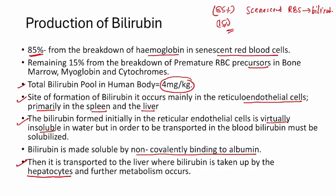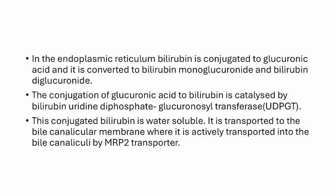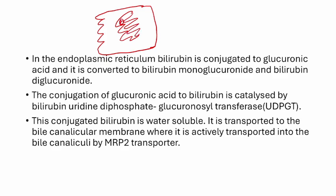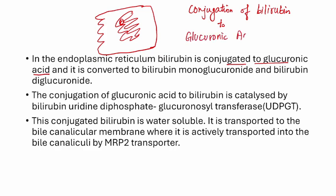Albumin-bound bilirubin reaches the liver, where hepatocytes very efficiently extract all the bilirubin from albumin in the blood. Bilirubin then enters the hepatocytes and further metabolism takes place in the endoplasmic reticulum. In the endoplasmic reticulum, bilirubin is conjugated to glucuronic acid — this is called conjugation of bilirubin, a very important step. The enzyme used is UDPGT — uridine diphosphate glucuronosyltransferase.